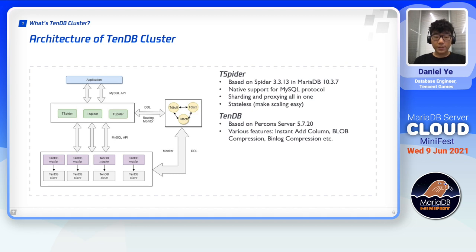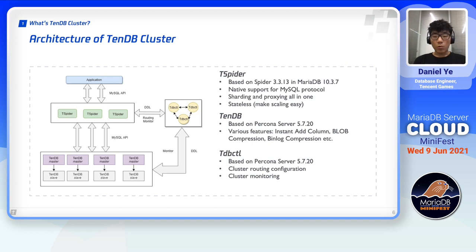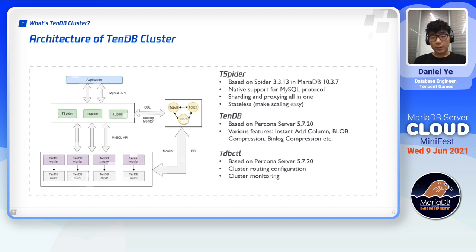Lastly, to the right is TDB control, whose job is to make sure the cluster works correctly. One crucial part of its job is to configure routing within the cluster — that is, to maintain the links between T-Spider and the data nodes. Another important task it does is to monitor the cluster status, making sure things like privileges, routing, and table structure in the cluster are healthy, and report errors if not.